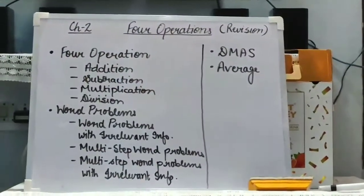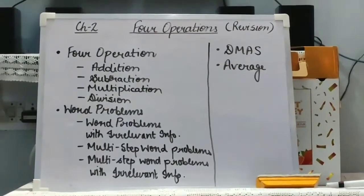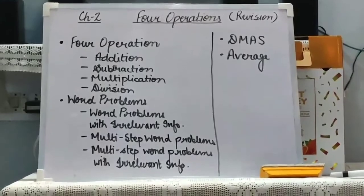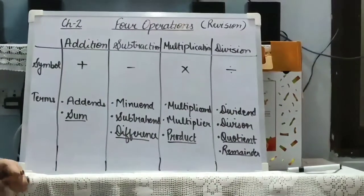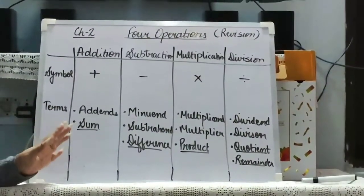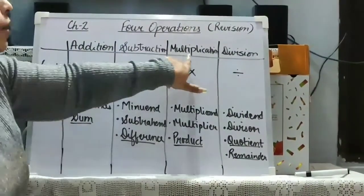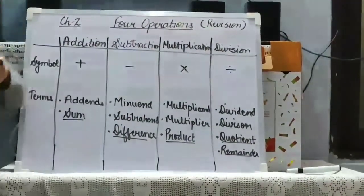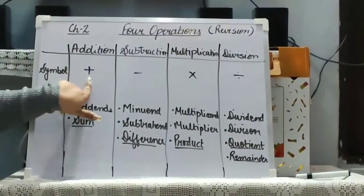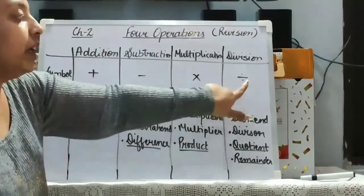Now we are going to revise the topics and subtopics one by one. At the starting of the chapter we have studied there are 4 basic operations: first addition, subtraction, multiplication, division. Then we have studied about the symbol — the symbol of addition, subtraction, multiplication and division.